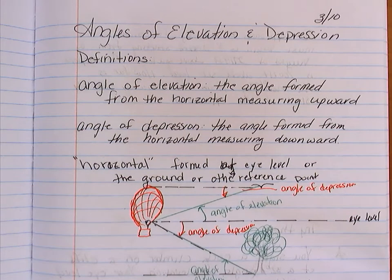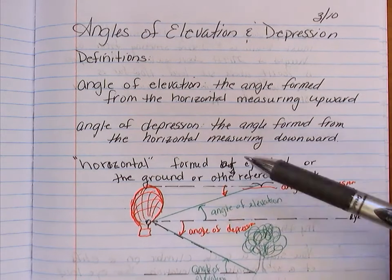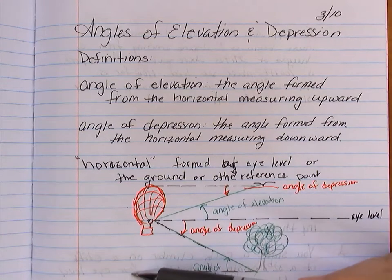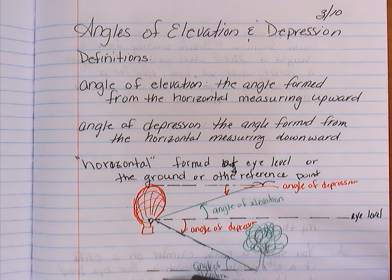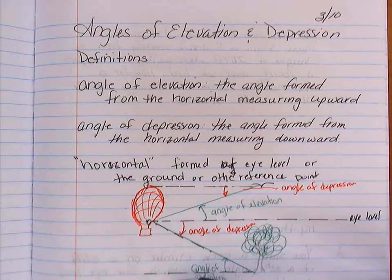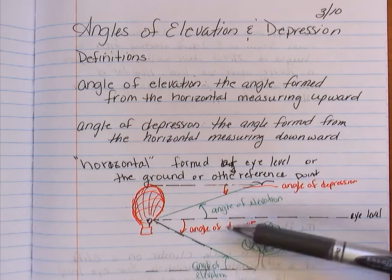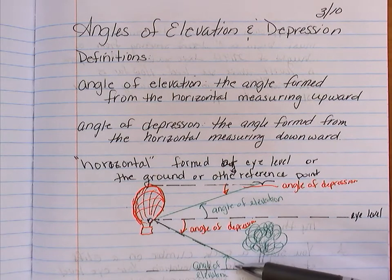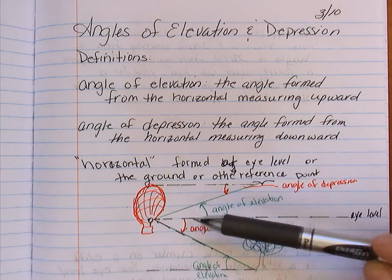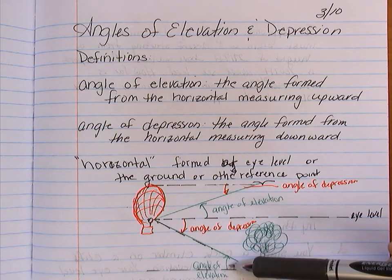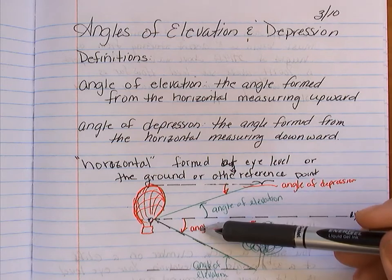So it's always the point of reference. The other thing you should be aware of is since these are horizontal lines and they are parallel to each other, this angle of elevation is equal to the angle of depression. So that's going to be relevant later. Again, the angle of elevation is equal to the angle of depression.